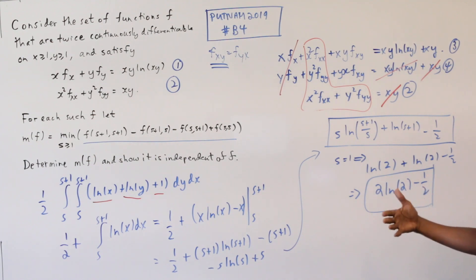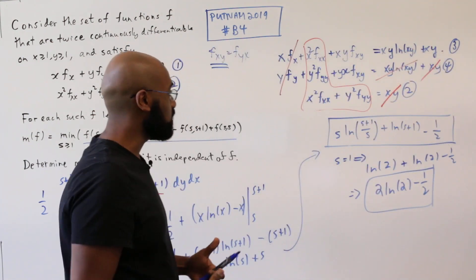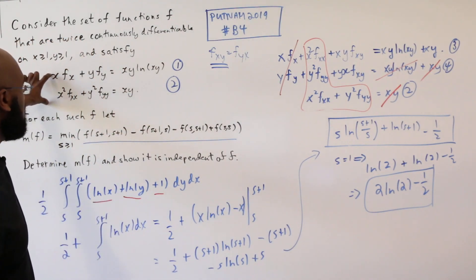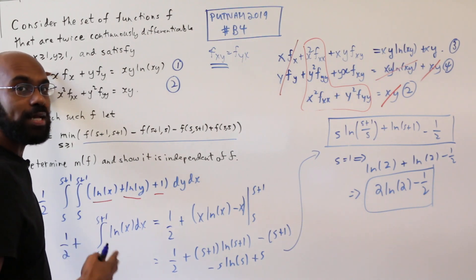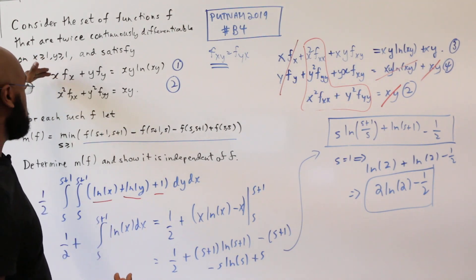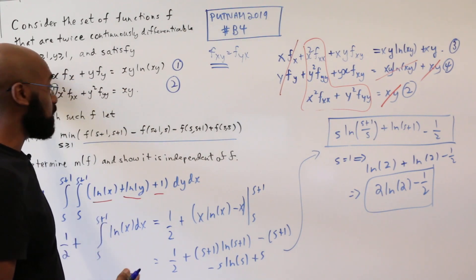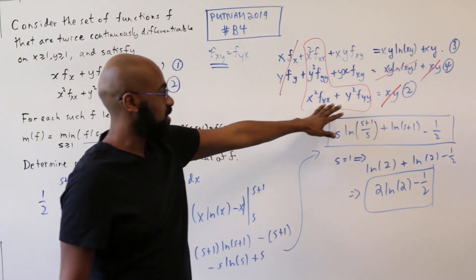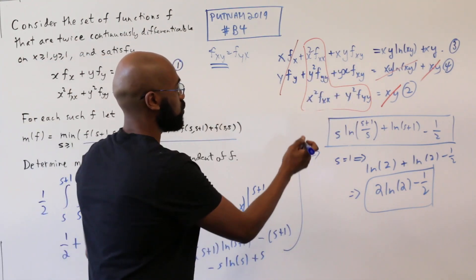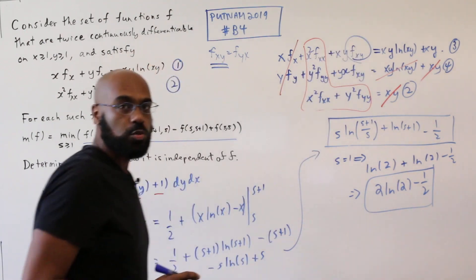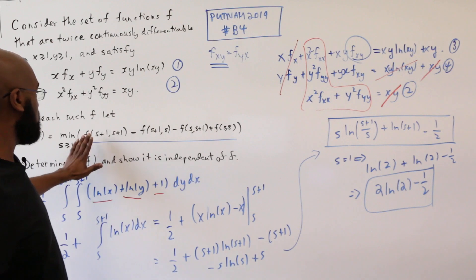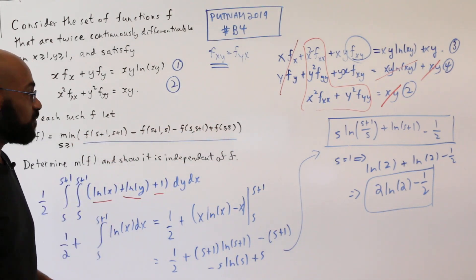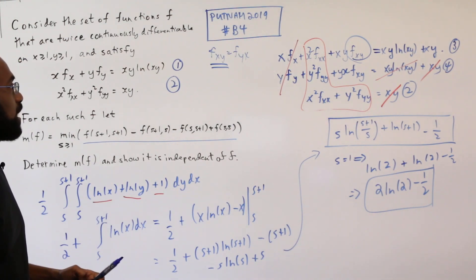So I think the moral of the story in this problem is it looks really complicated to begin with. You're given a lot of information, but you can streamline it by writing the information you have in terms of things that look quite similar to each other, which in this case turned out to be changing the first expression to be something about second derivatives. Then, once we had this expression for the mixed partial fxy, we're able to write the expression that we're trying to minimize in terms of that using the fundamental theorem of calculus.